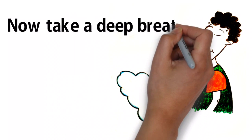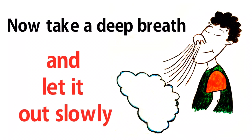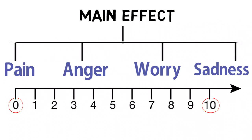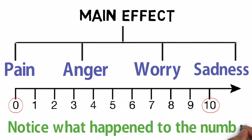Now, take a deep breath, and let it out slowly. Tune in to your pain, anger, worry, or sadness level, and notice what happened to the number, measuring the distress from zero to ten.